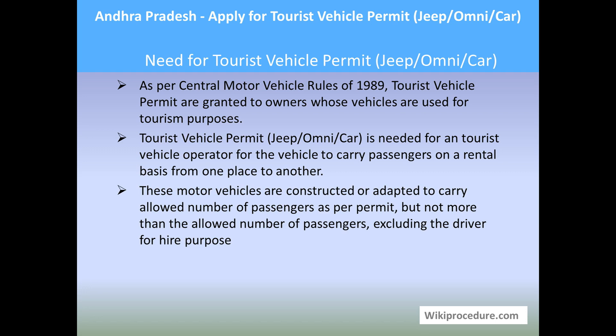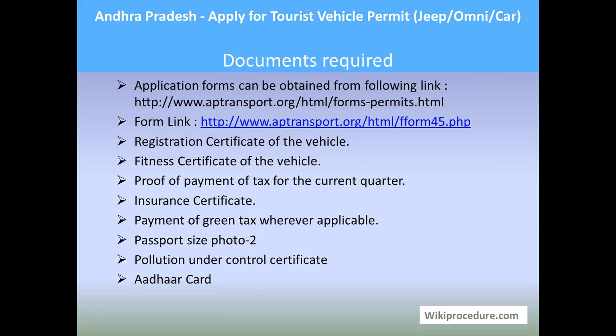Tourist vehicle permits are granted to owners whose vehicles are used for carrying passengers for tourism purposes. The tourist vehicle permit — jeep, omni, or car — is needed for a tourist vehicle operator to carry passengers on a rental basis from one place to another. These motor vehicles are constructed or adapted to carry the allowed number of passengers as per the permit, but not more than the allowed number excluding the driver, since jeep, omni, and car each have different permitted numbers.